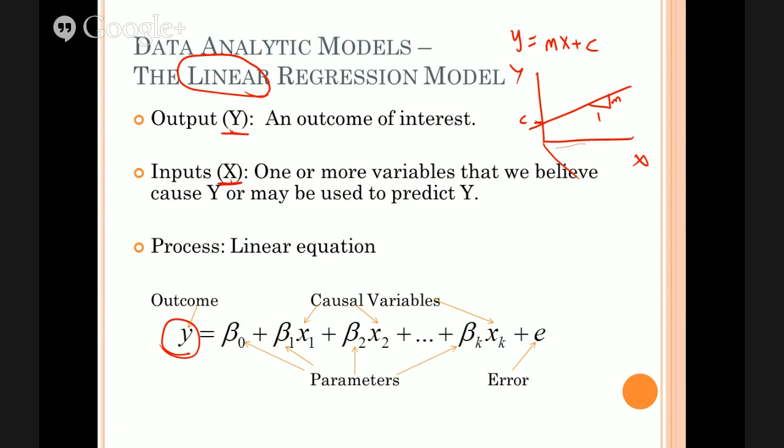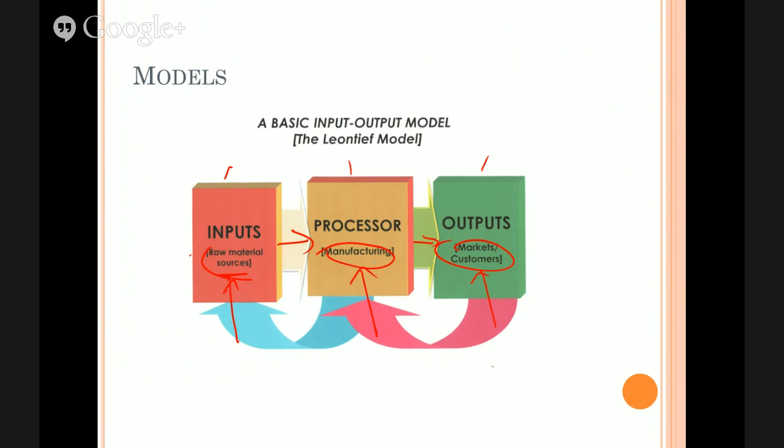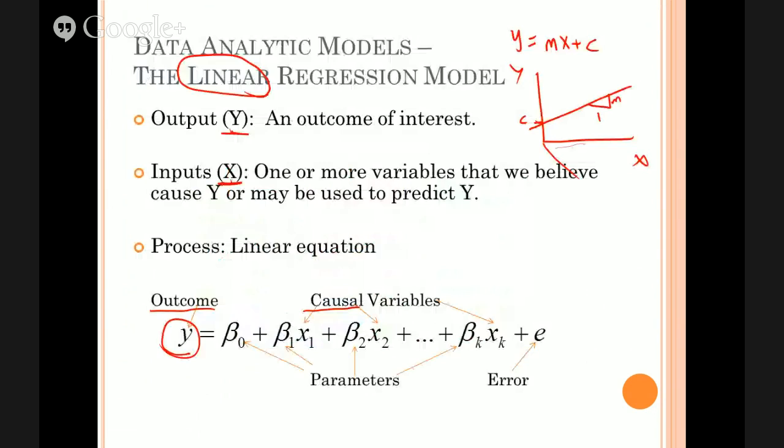So y is an outcome of interest. Could be how much electricity did you generate from your coal plant or it could be how many customers do you have who are unhappy with your service or how many times does this person go to the doctor. Any possible outcome that's of interest. The x's are what we describe as causal variables. So those are the factors that we think cause y. They're the inputs that having gone through the process would produce the output. So in this case we're going to say that there are 1, 2, 3, 4 up to k of these x's. So k could be 1, could be only one causal factor but that's very unlikely. More than likely we've got 2, 3, 4 however many x's factors that we think drive y.